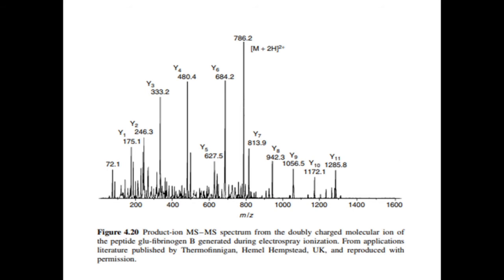Electrospray is an unusual mass spectrometry technique in that it allows the study of the three-dimensional structure of compounds, particularly proteins, in solution, as it is believed that this structure is relatively unchanged when ions are transferred to the vapor phase. This type of application will be discussed in more detail in another chapter, but attention is drawn at this point to the previous comments regarding the effect that HPLC conditions such as pH may have on the appearance of an electrospray spectrum and conformational deductions that may be made from them.